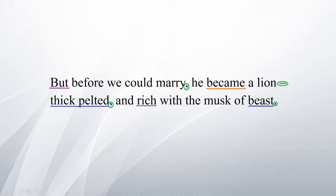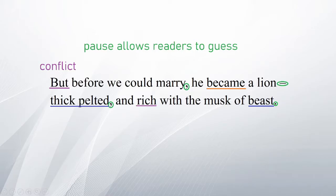Now I will be analyzing the poem. 'But before we could marry' — the poem starts off with a 'but', so you immediately know there's a conflict. There's a pause after 'marry', and reading it for the first time I would've thought she's going to say she found out he was cheating. Then the persona just flips the entire thing around, making you scratch your head. 'He became a lion' — 'became' is a definitive word, and the pause at the end of the line, indicated by the dash, shows the sense of finality accompanying this claim. It gets even weirder as we move on, and hopefully my theories at the end may clear up confusions.